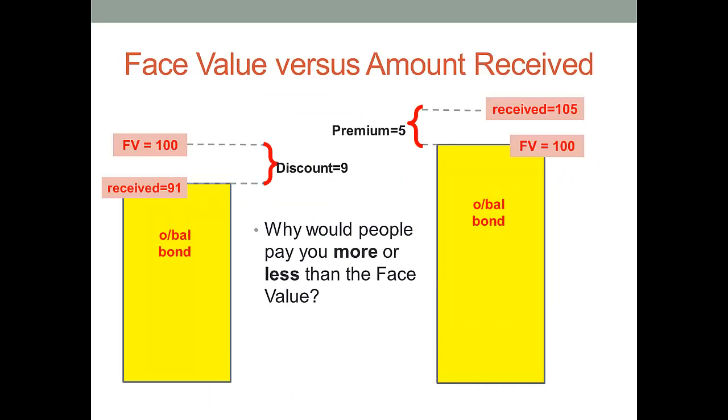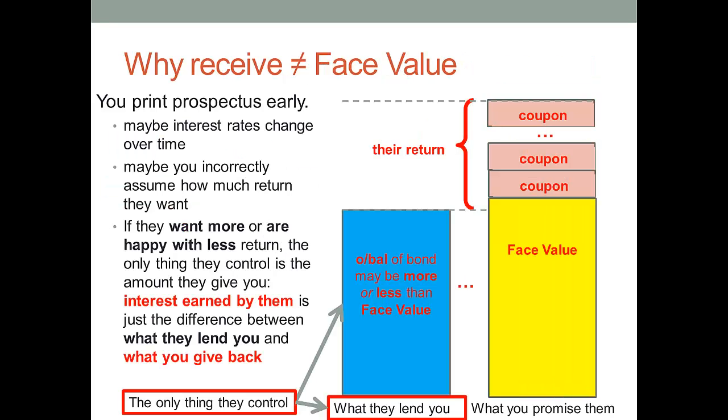But what if you're not happy with a 10% rate of return? I mean, you might give me more than the face value. So you might give me a premium of five. So even though it's a face value of 100, you might give me 105. Or you might give me less than 100. The face value is 100, but for some reason, you're only willing to give me $91. So there's a discount of nine, if you like. So the question we need to ask now is, why would people pay you more or less than the face value of the bond?